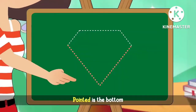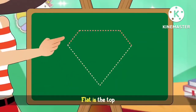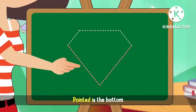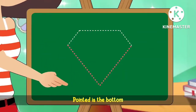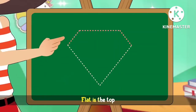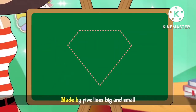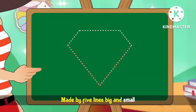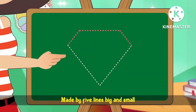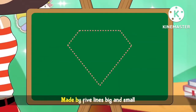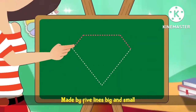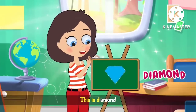Pointed is the bottom, flat is the top. Pointed is the bottom, flat is the top. Made by five lines, big and small. Made by five lines, big and small. This is diamond.